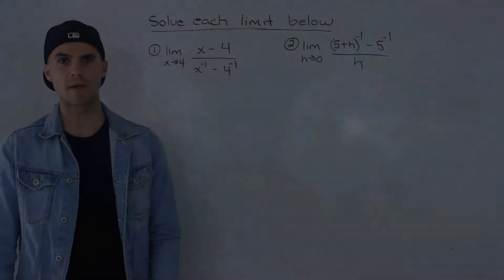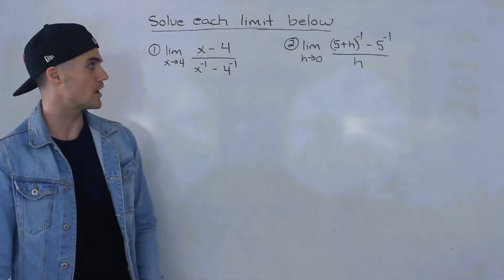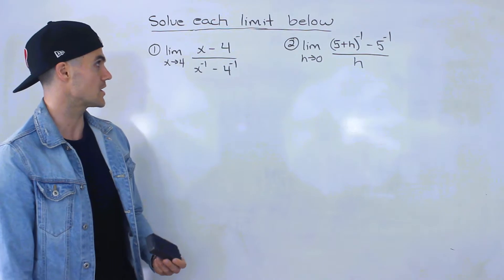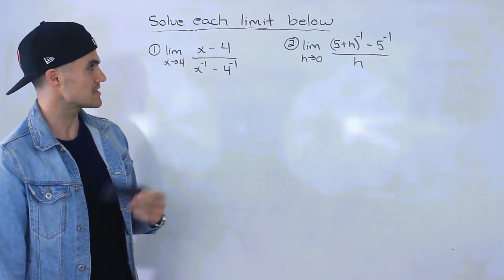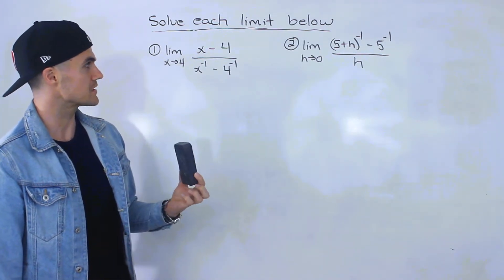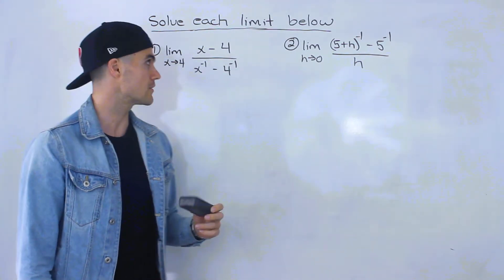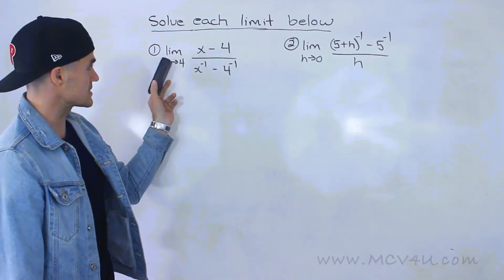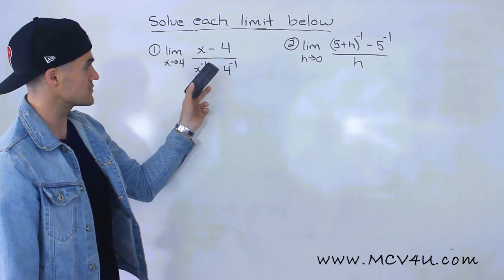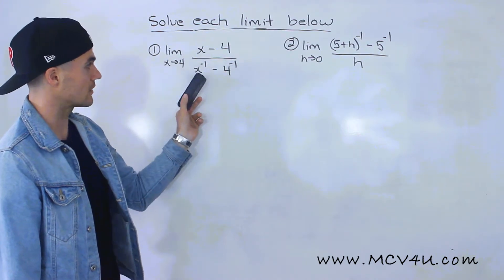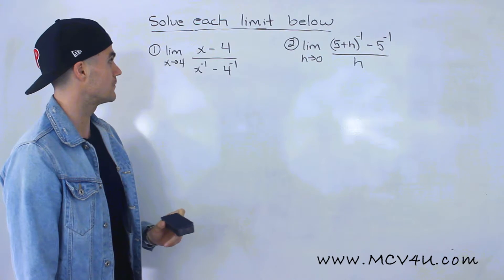Welcome back. Patrick here, moving on to a few other limits. Notice these are in similar formats because we have these exponent negative ones to deal with. The first limit: we have the limit as x approaches 4 of x minus 4 over x to the power of negative 1 minus 4 to the power of negative 1.